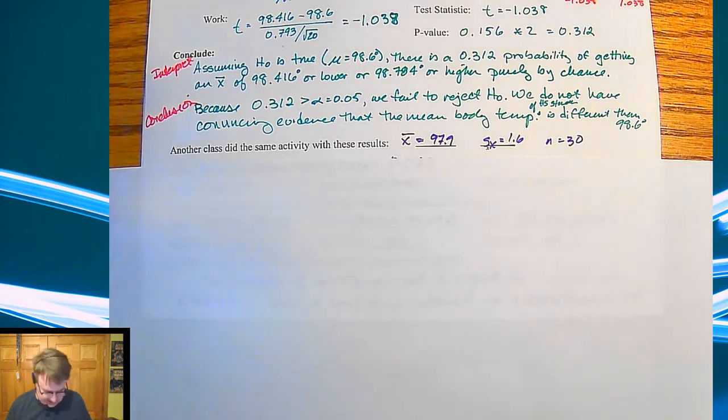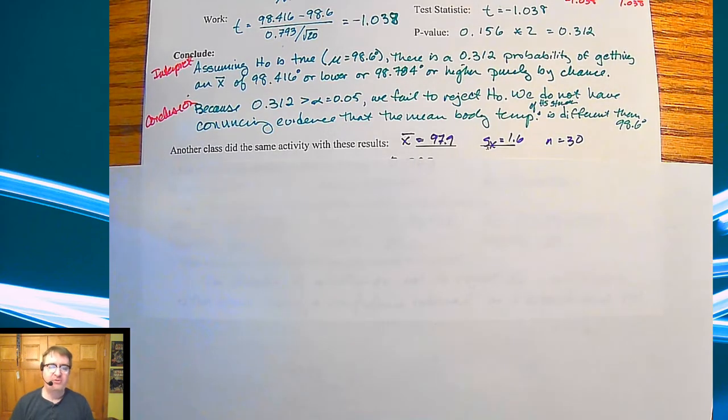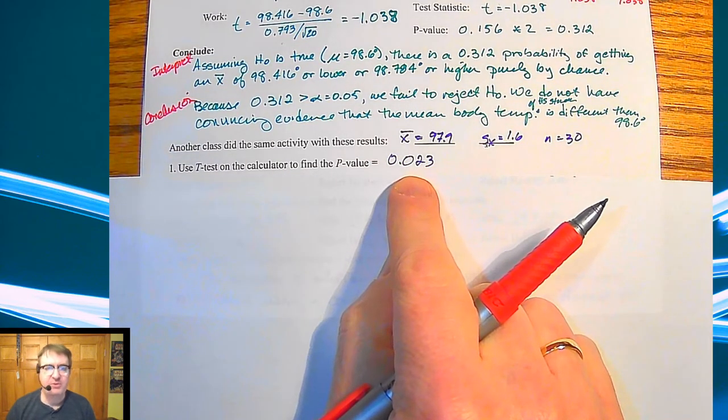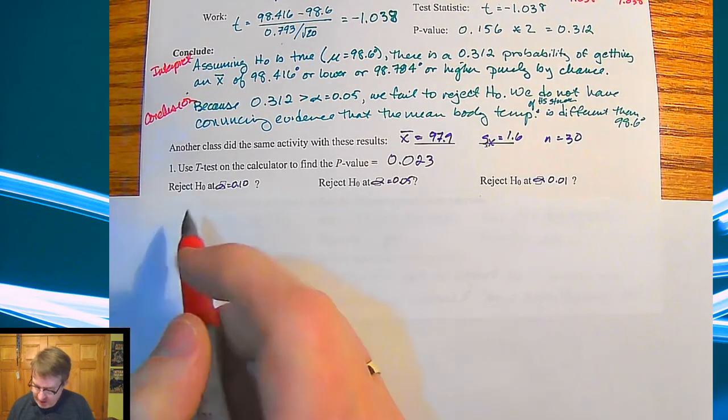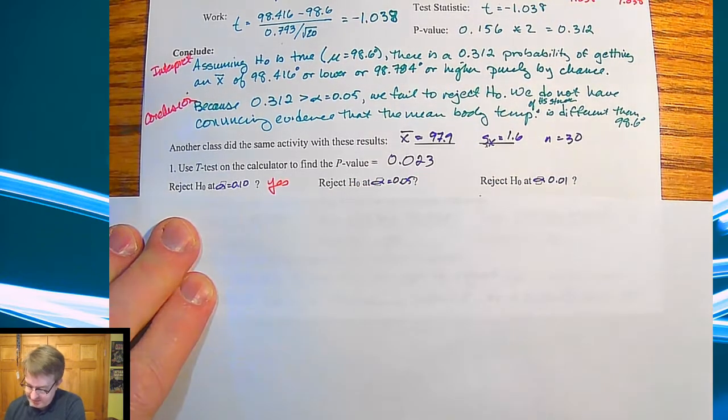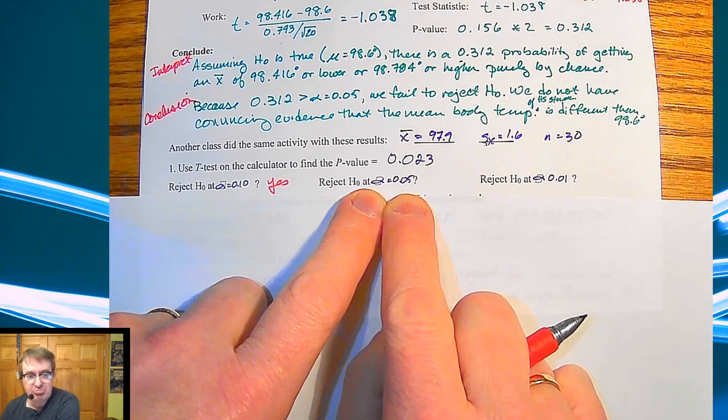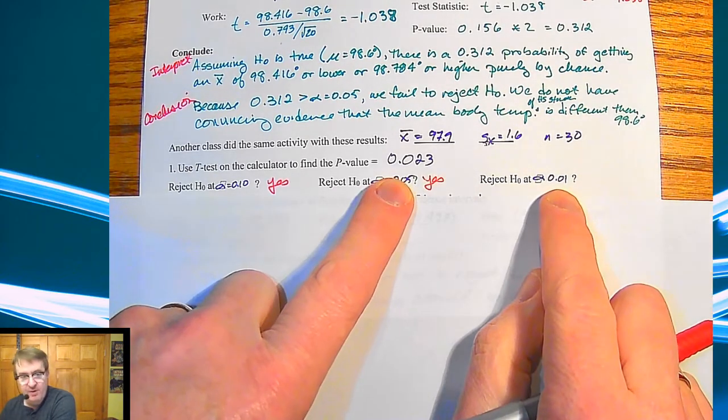So let's say another class did the activity and had these results. Their mean was 97.9, their standard error was 1.6, and their sample size was 30. Using a calculator, you can figure out your t-test here is 0.023. So the question is, could I reject it at an alpha value of 10%? Yep. Because this is less than 10%. Could I reject this at an alpha value of 5%? Yeah. Could I reject this at an alpha value of 1%? No.